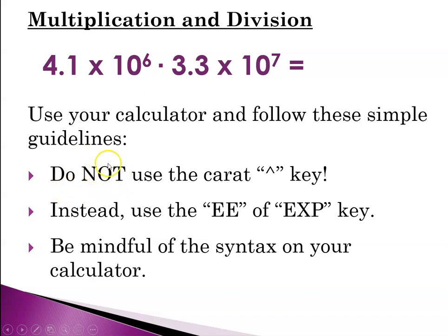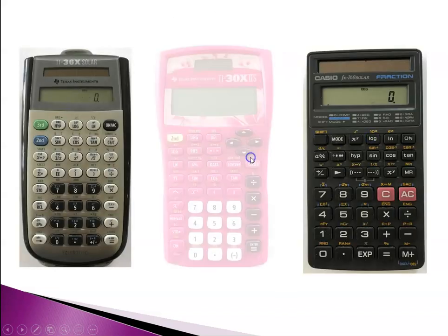First off, do not—I can't say this enough times—do not use the caret key, the little arrow thing. Instead, use whatever your calculator has. Sometimes it says EE, sometimes it says EXP, and sometimes there will be a little button that says times 10 to the X. The reason we don't use the caret key is that for the calculations we'll be doing this year, using a lot of numbers in scientific notation, if you use the caret key you have to be very very picky and careful with using parentheses for everything. And if you miss one parentheses, the whole thing goes south. So you have to be mindful of the syntax on your particular calculator. So I'm going to show you three calculators.